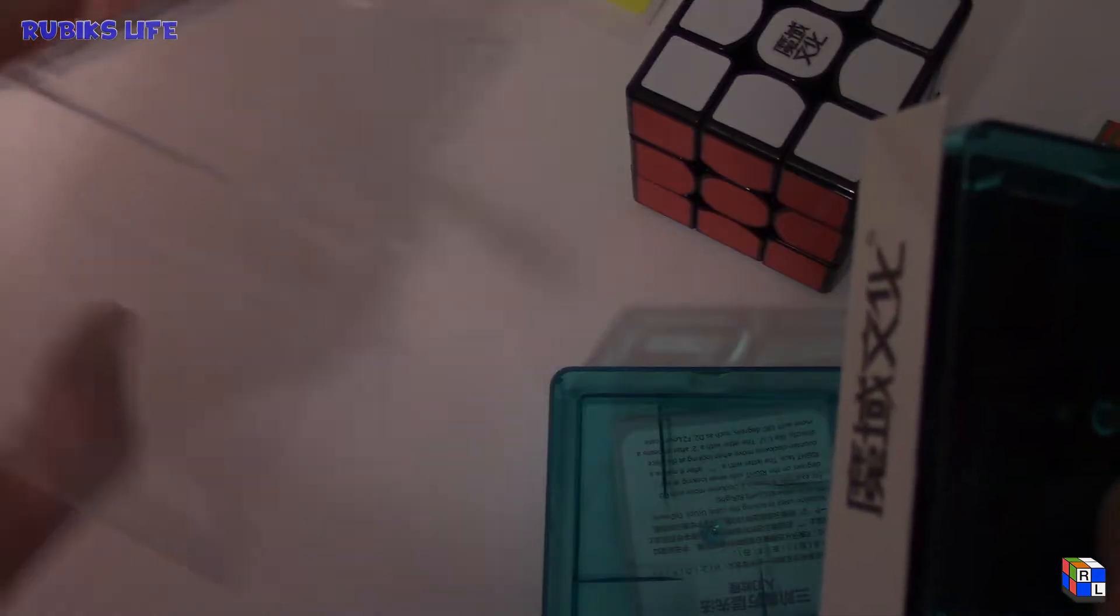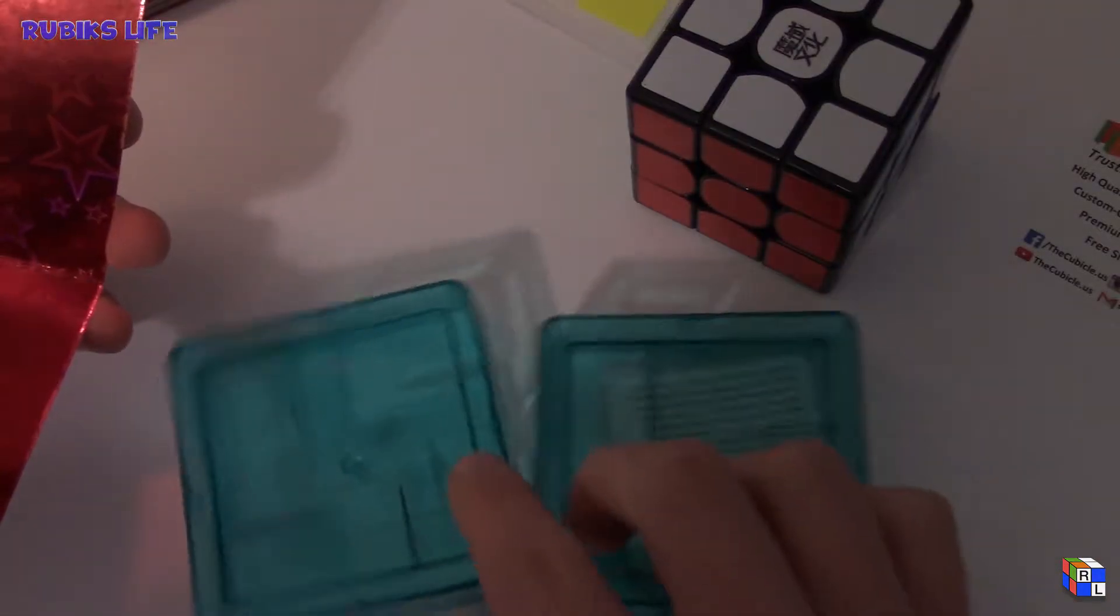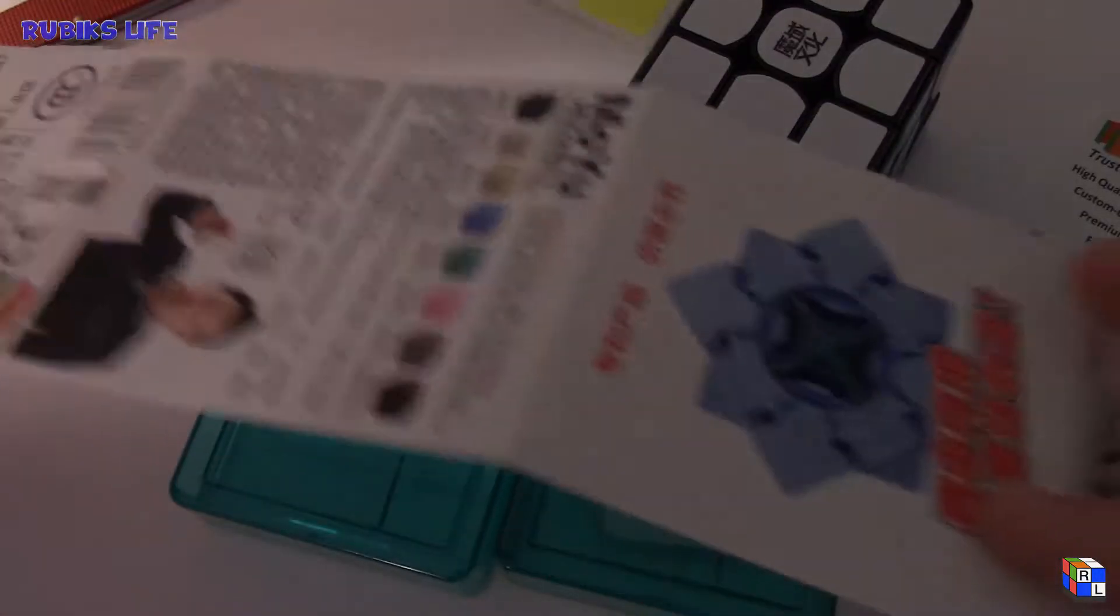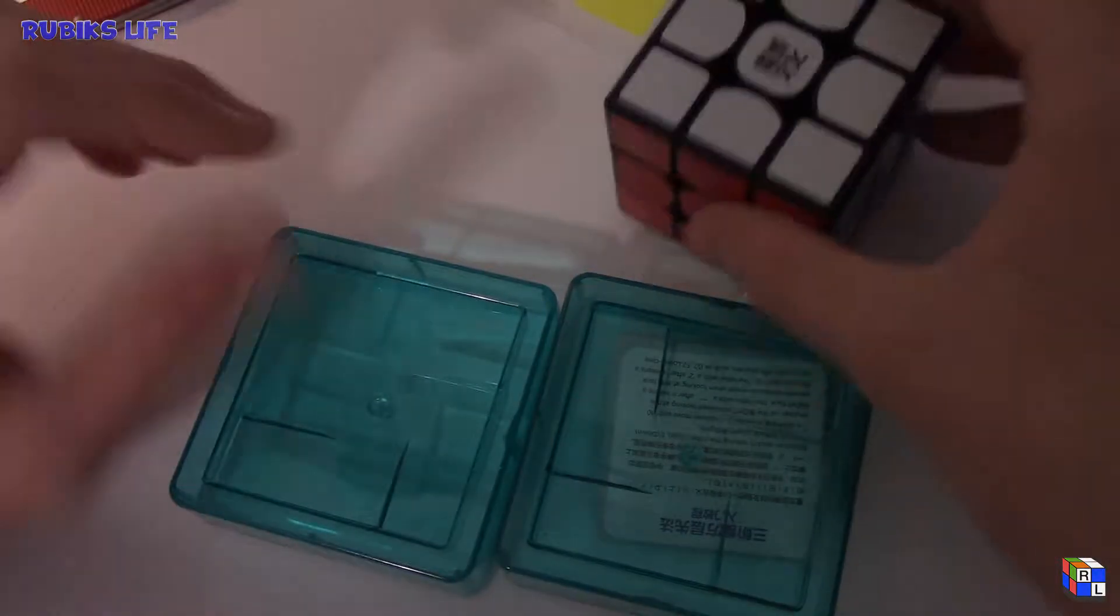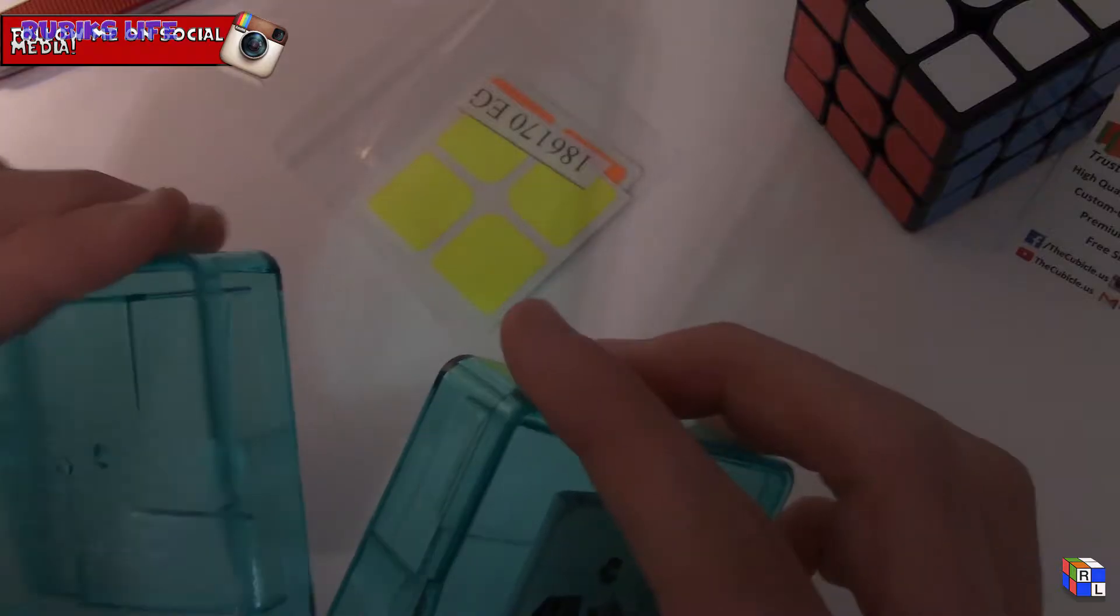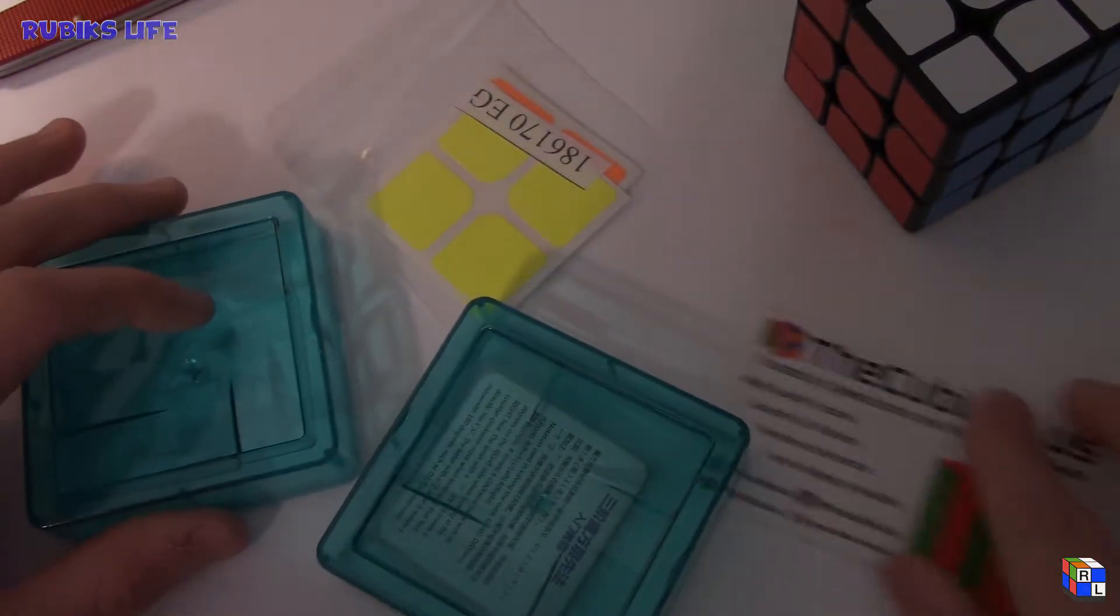Here's the actual plastic, there's two tensioning things I'll go into later because I'm not really sure what they do, and a really nice shiny box. So we've got the cube, stickers, tensioners, and the card.